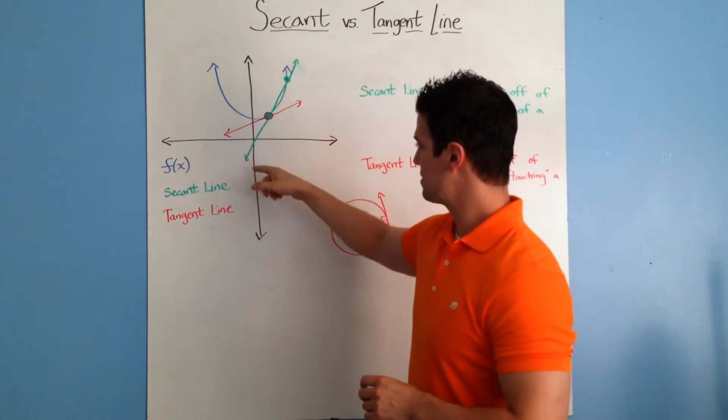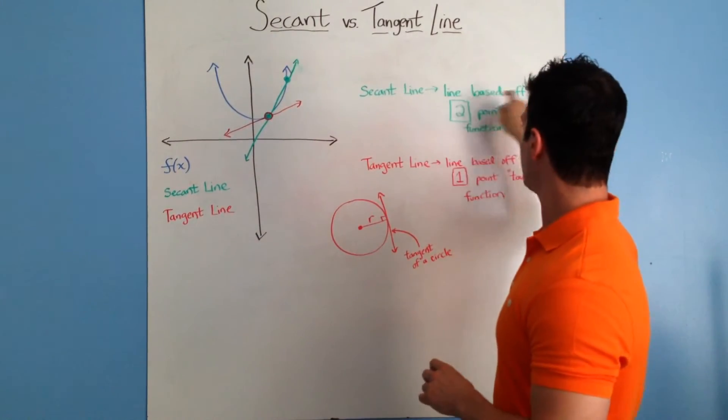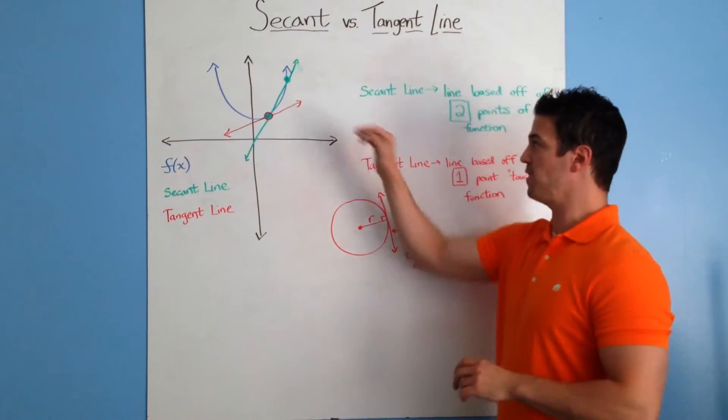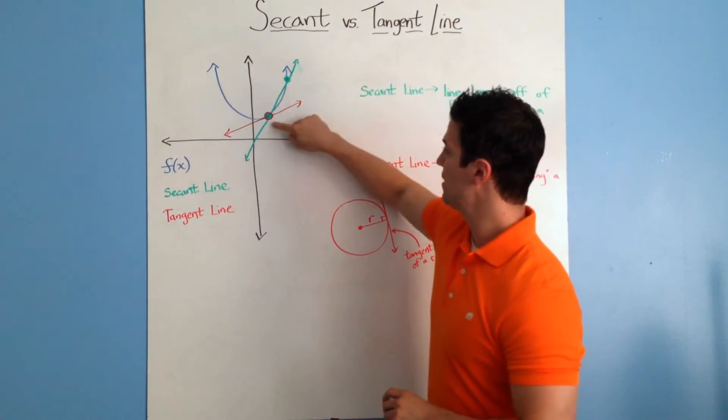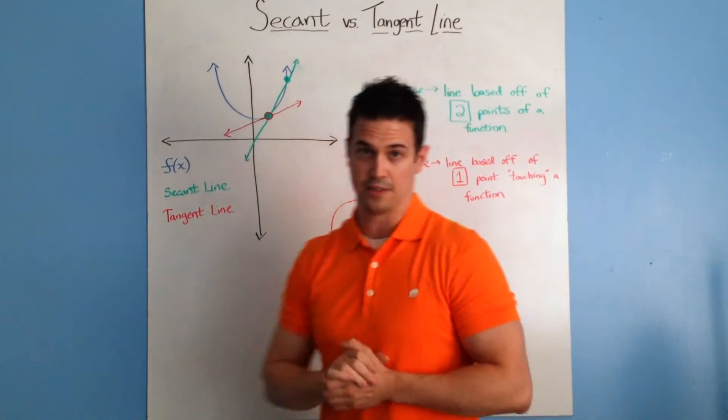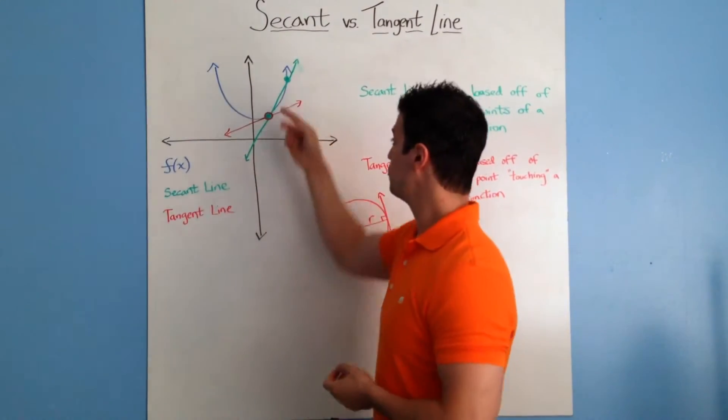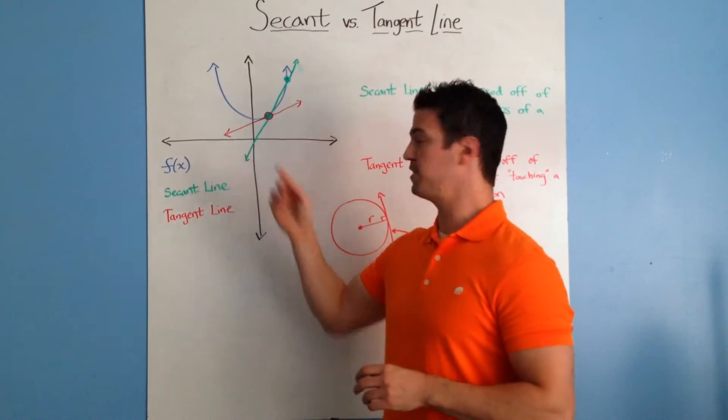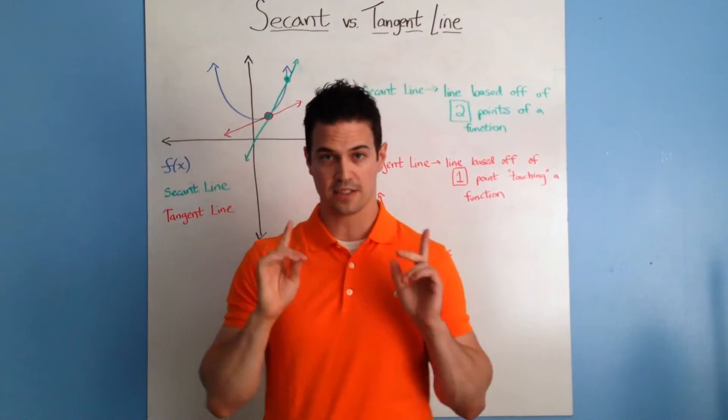In green, we have the secant line, which is a line based off two points of the function. I connected these two points and made a line. With those two points, you can figure out the equation of that line. That's the secant line.